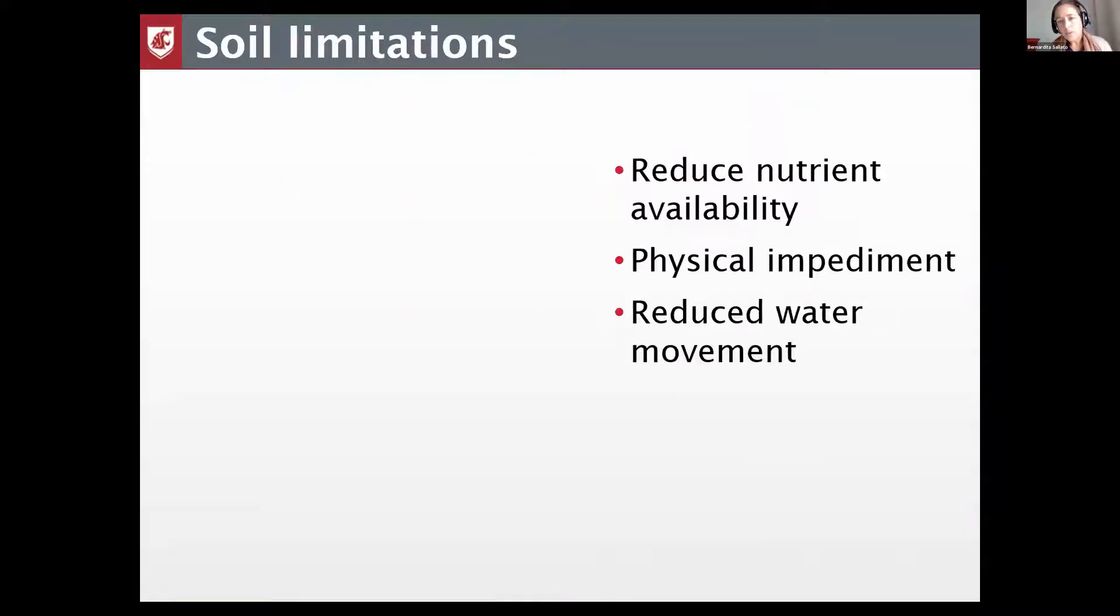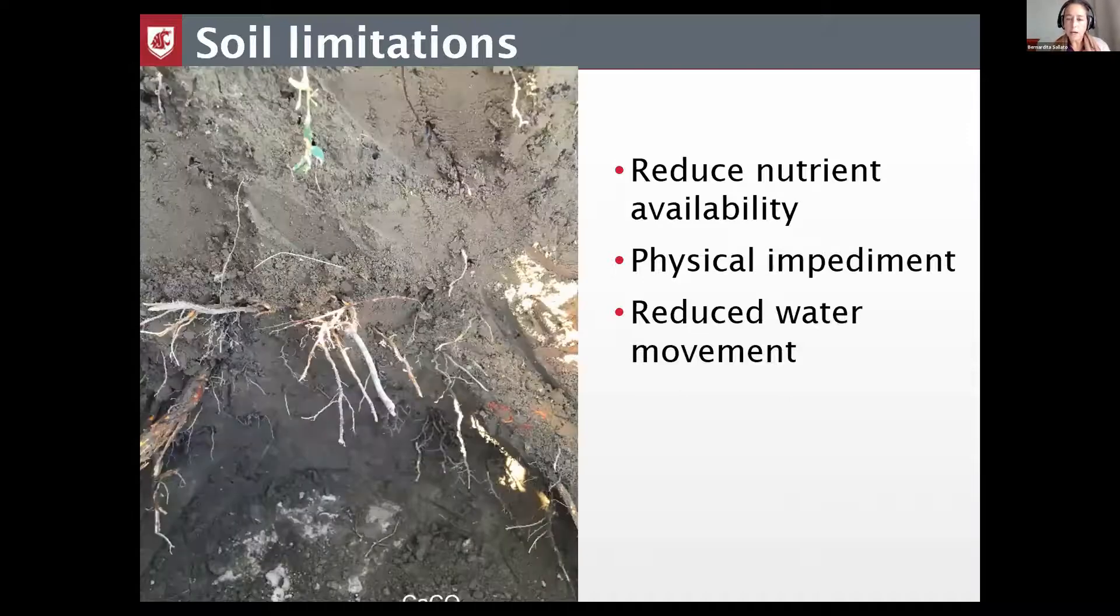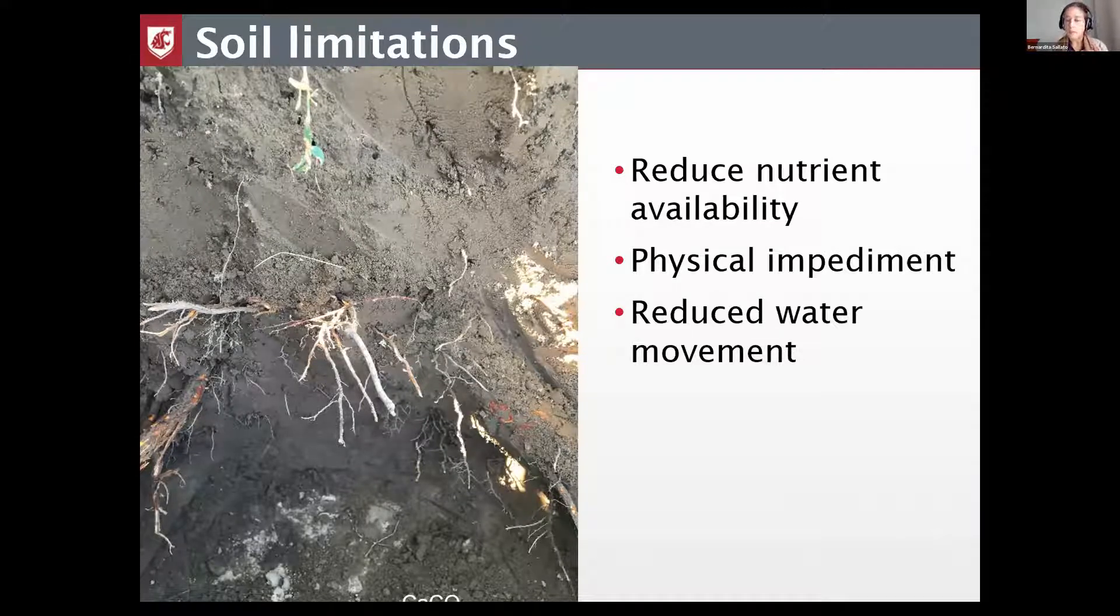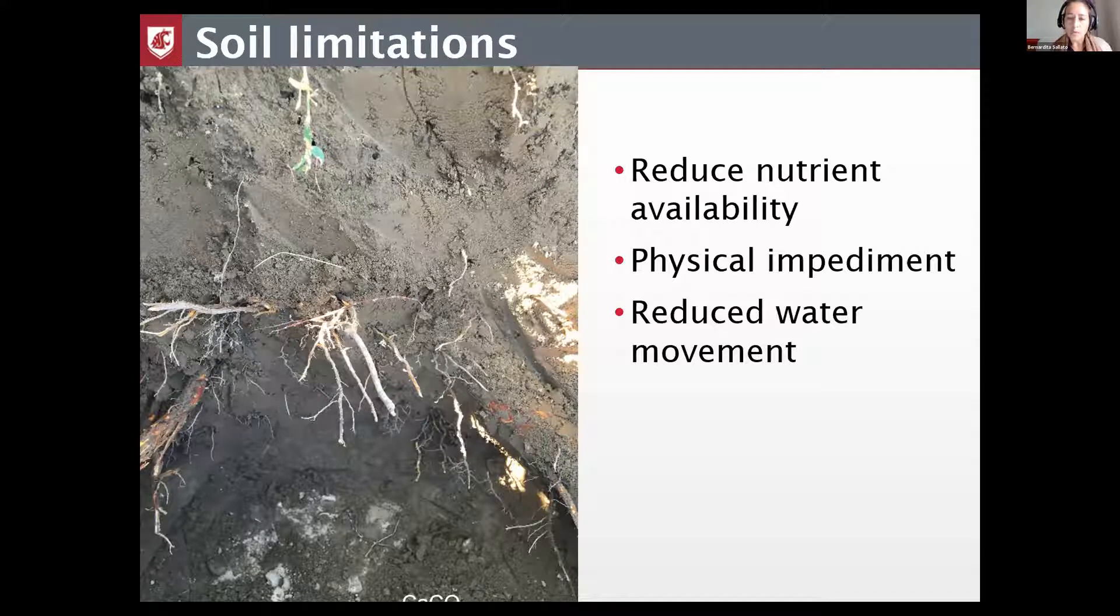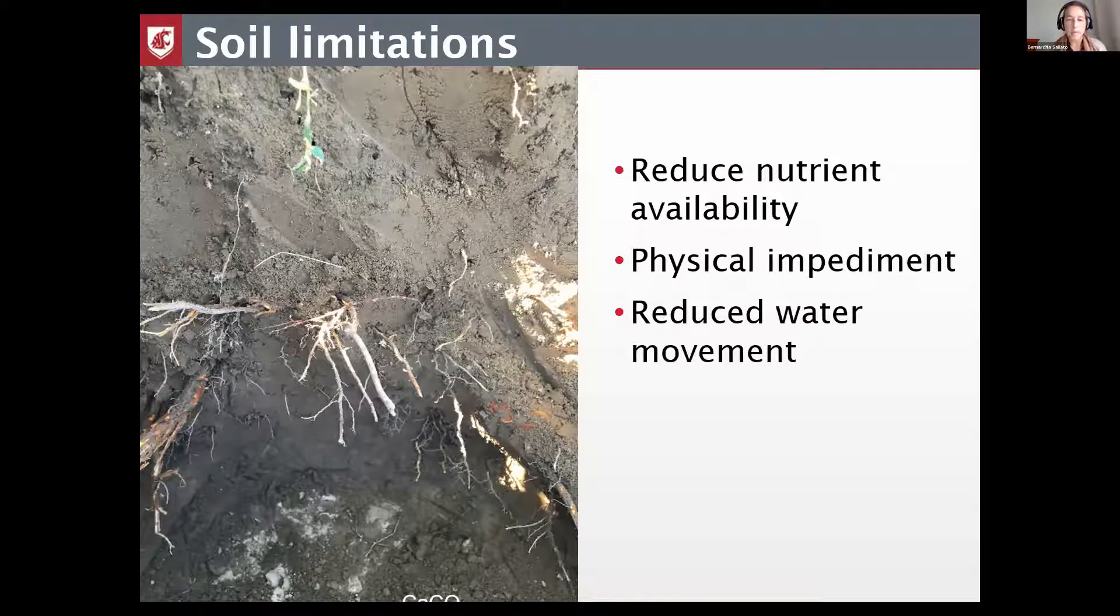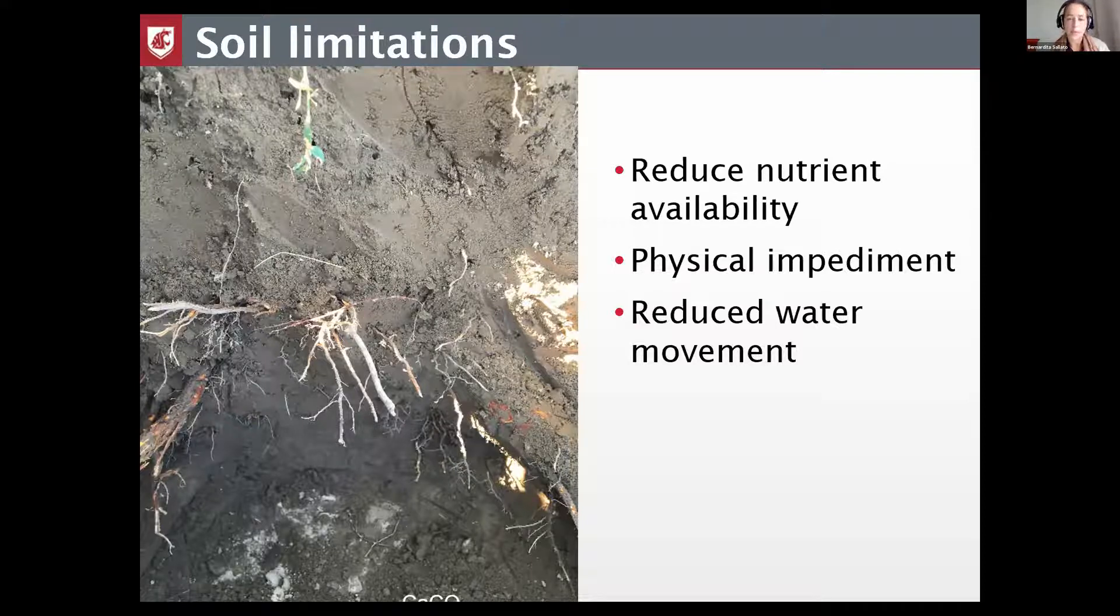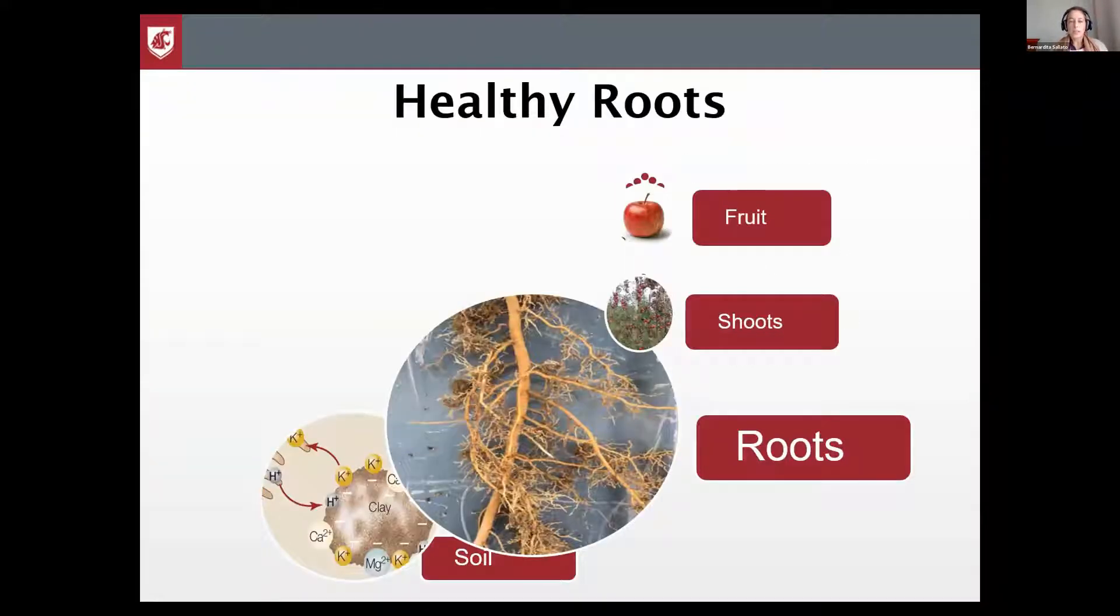Now, besides reducing the nutrient availability, the calcium carbonate in some areas can also be a physical impediment because it creates a layer that reduces the possibility for roots to go and penetrate. So they normally stay in the upper layer of the soil, but also it reduces the water movement through the soil. And because this layer is very variable in the orchard in depth, the variability of this layer can create a high variability of growth and impediments throughout the orchard.